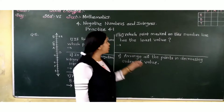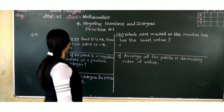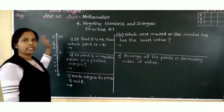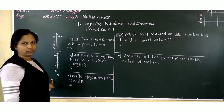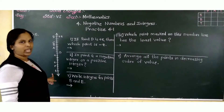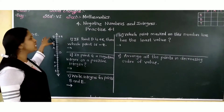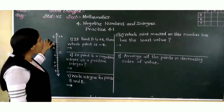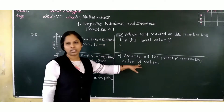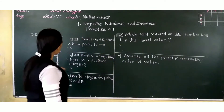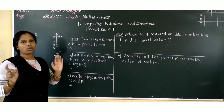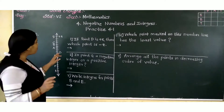Let us now see question number 5. In this, they have given a figure and from this figure, this is a number line and from this we have to solve these questions. First of all, let us observe the number line.